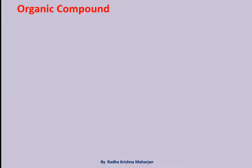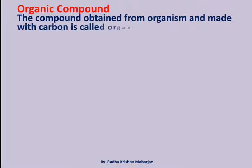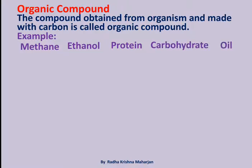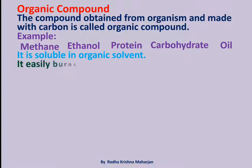Organic Compound: The compound obtained from an organism and made with carbon is called an organic compound. Examples include methane, ethanol, protein, carbohydrate, and oil. It is soluble in organic solvent, it easily burns, and it has covalent bonds.